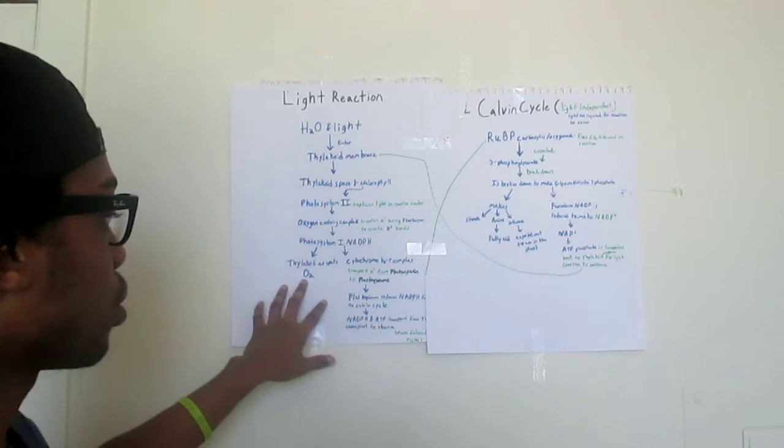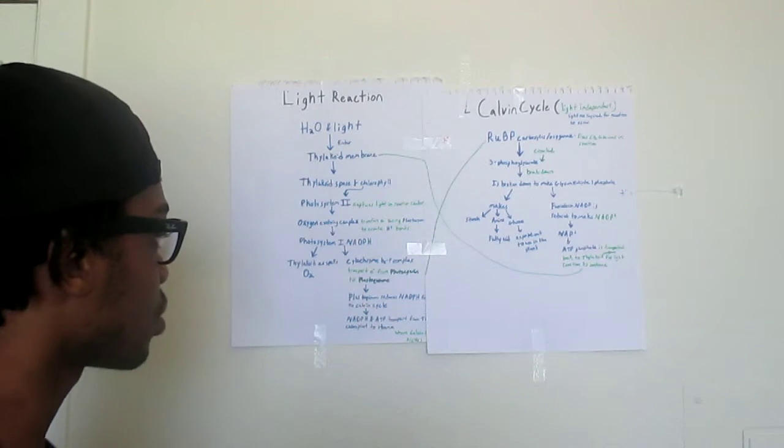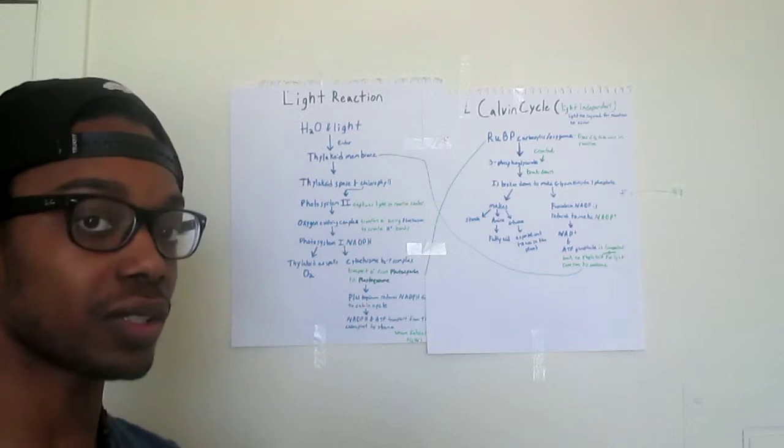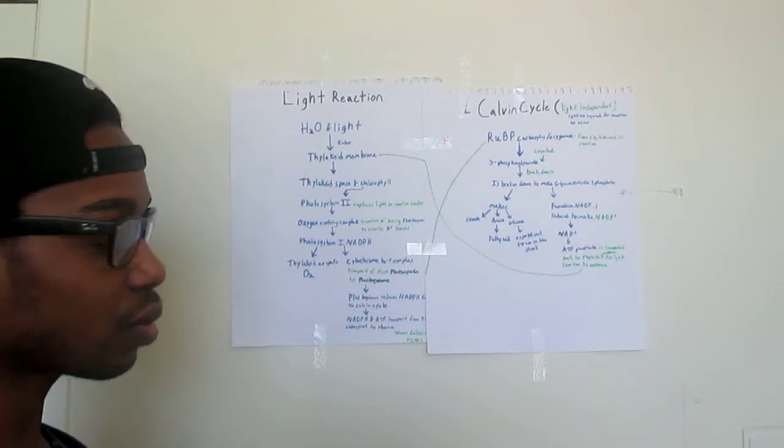One is the thylakoid which expels O2 oxygen, and the cytochrome b6f complex which transfers electrons from the plastoquinone to the plastocyanin.